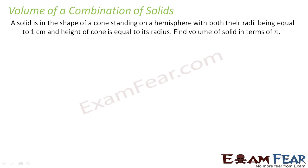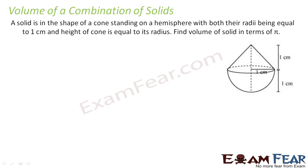The question says a solid is in the shape of a cone standing on a hemisphere with both their radii being equal to 1 centimeter and height of the cone is equal to the radius. We need to find the volume of the solid in terms of pi. There is a cone standing on a hemisphere, the radius is 1 and the height of the cone is also 1. We have to find the volume of this figure.